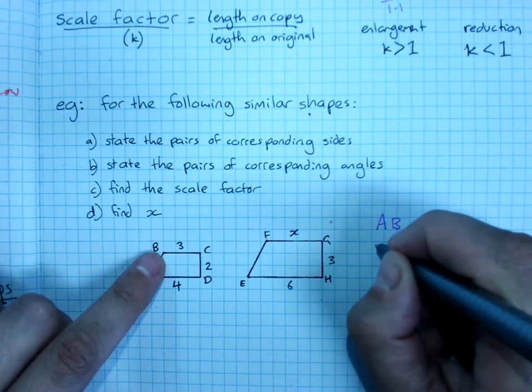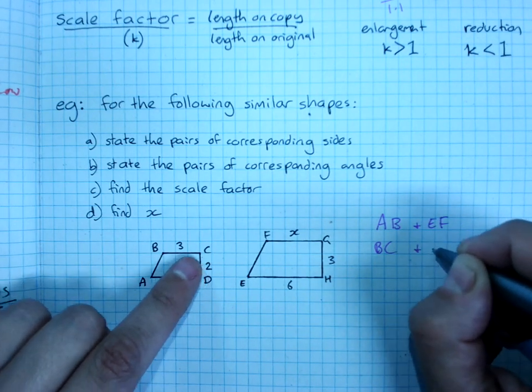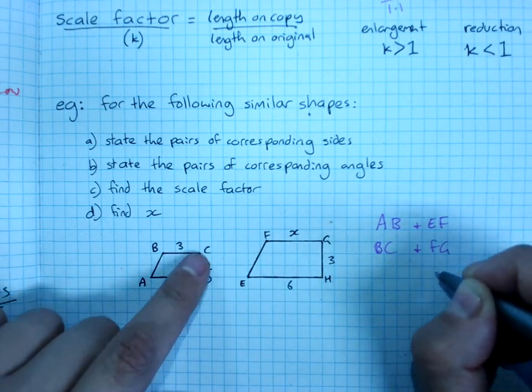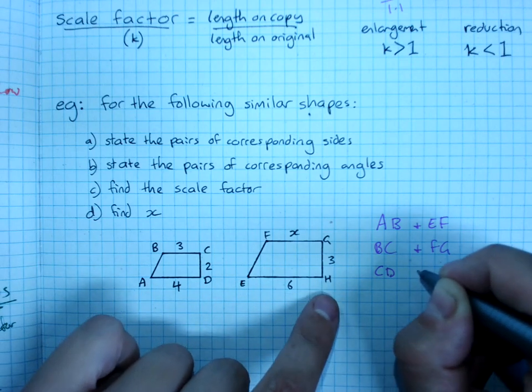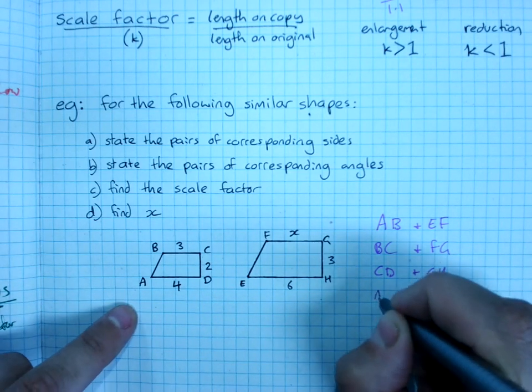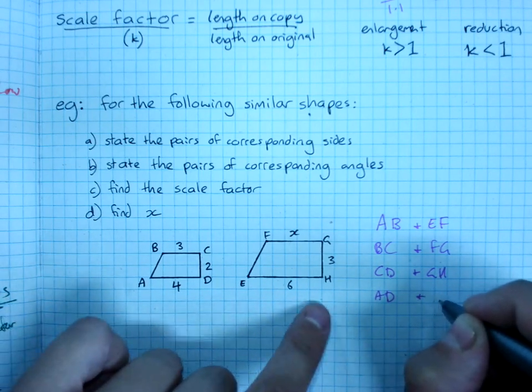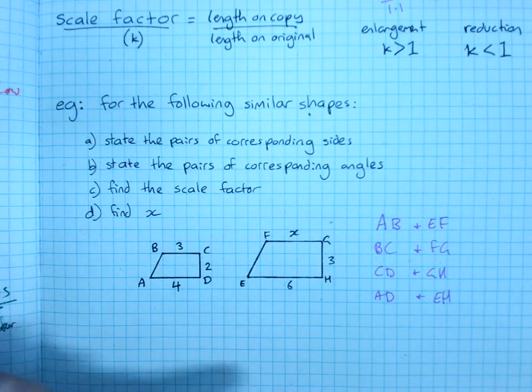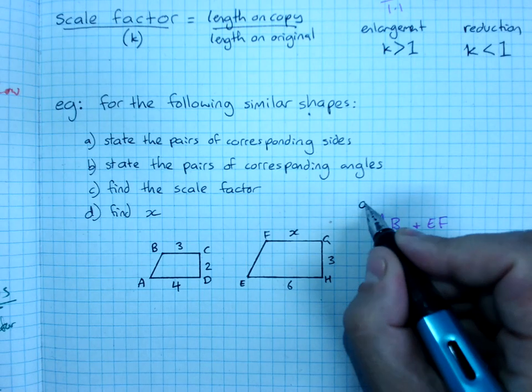BC corresponds to FG, CD corresponds to GH, and AD corresponds to EH. So there we have question A.